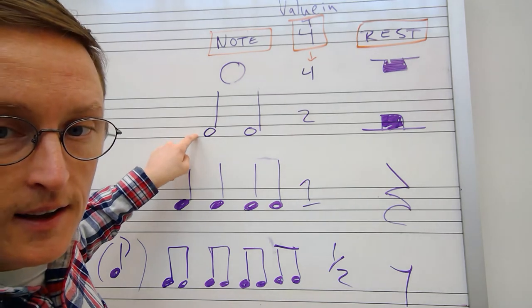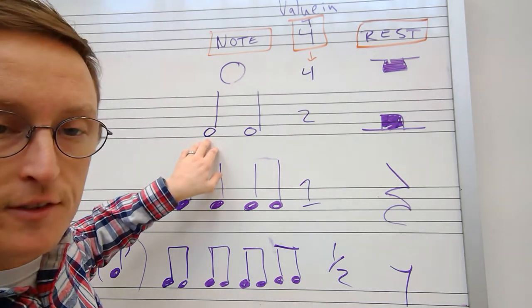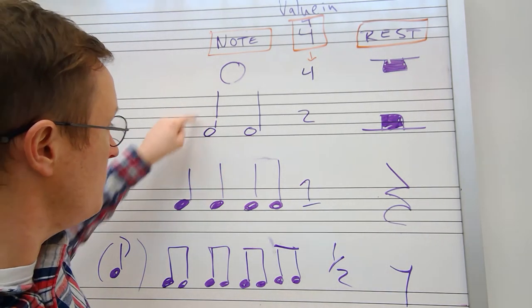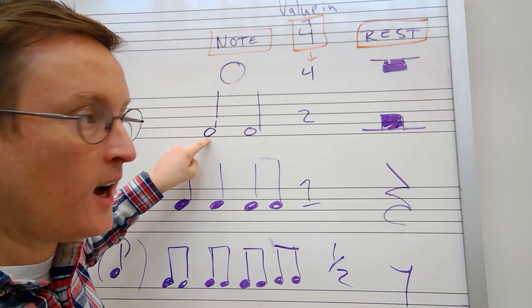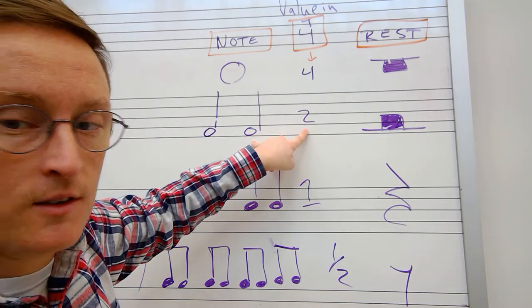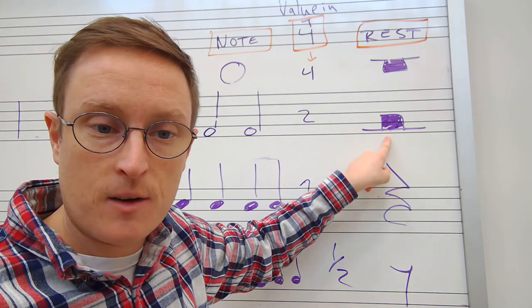Two half notes fit in a whole note. So we make the half note by adding a stem to the note head. You add a stem to the note head. The note head is still hollow. Each half note is worth two beats in 4-4 time and that is a half rest. It looks like a hat. That's how we remember that.